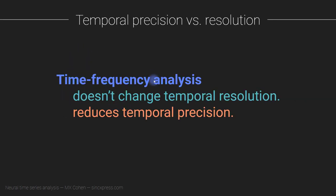Let's talk about time frequency analysis, and here I'm referring specifically to wavelet convolution and filter Hilbert. For wavelet convolution and filter Hilbert, the time frequency analysis does not change the temporal resolution. So if you have your data recorded at a kilohertz and then you do wavelet convolution, the results are still at one kilohertz, you haven't lost any time points.